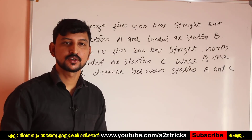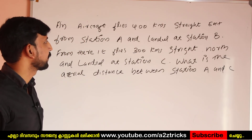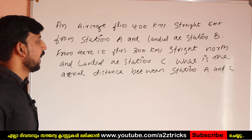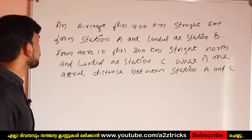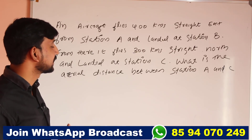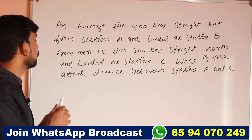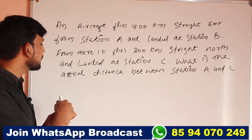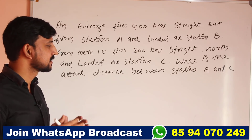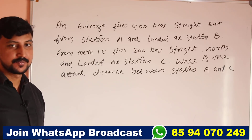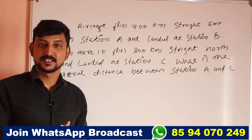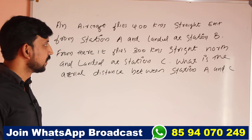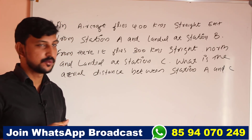An aircraft flies 400 km straight east from station A and lands at station B. From there, it flies 300 km straight north and lands at station C. What is the distance between station A and C?